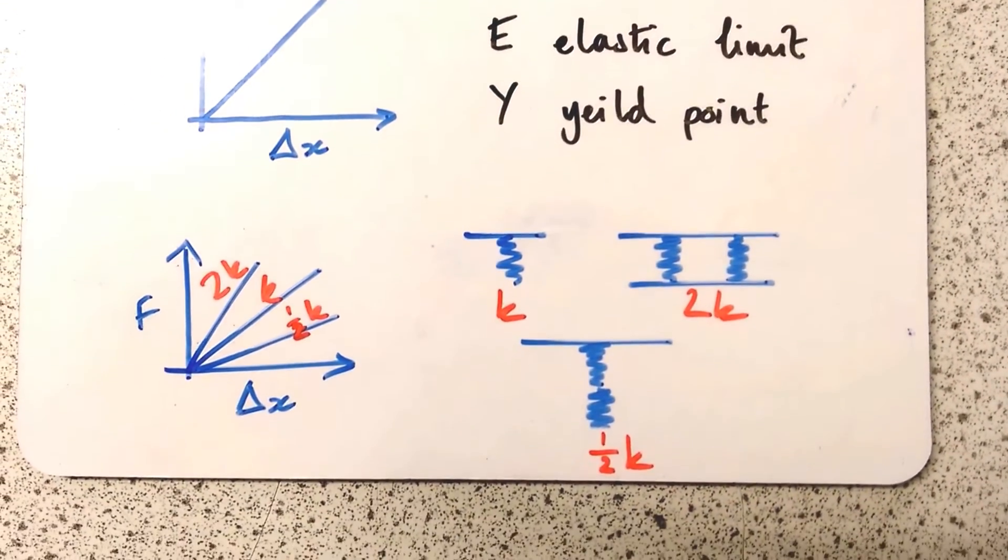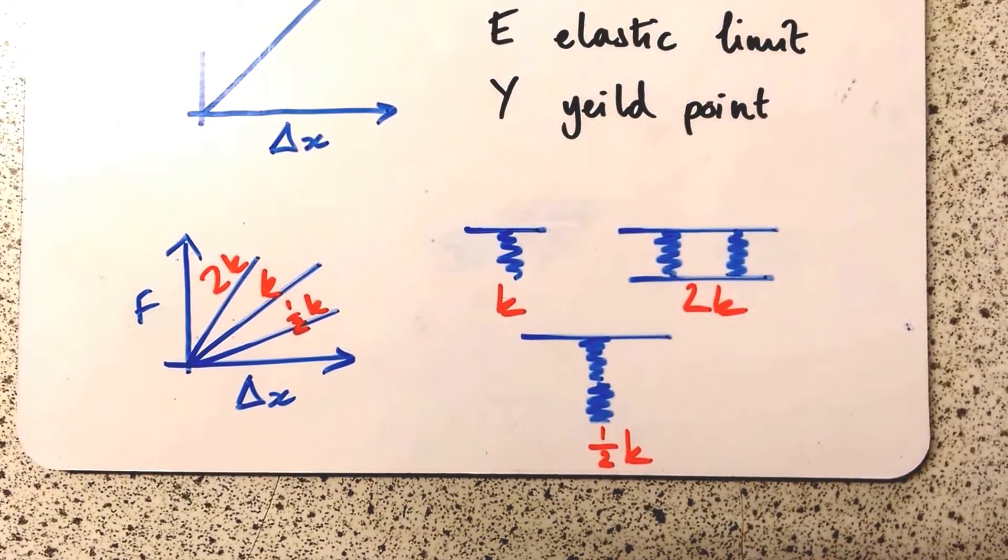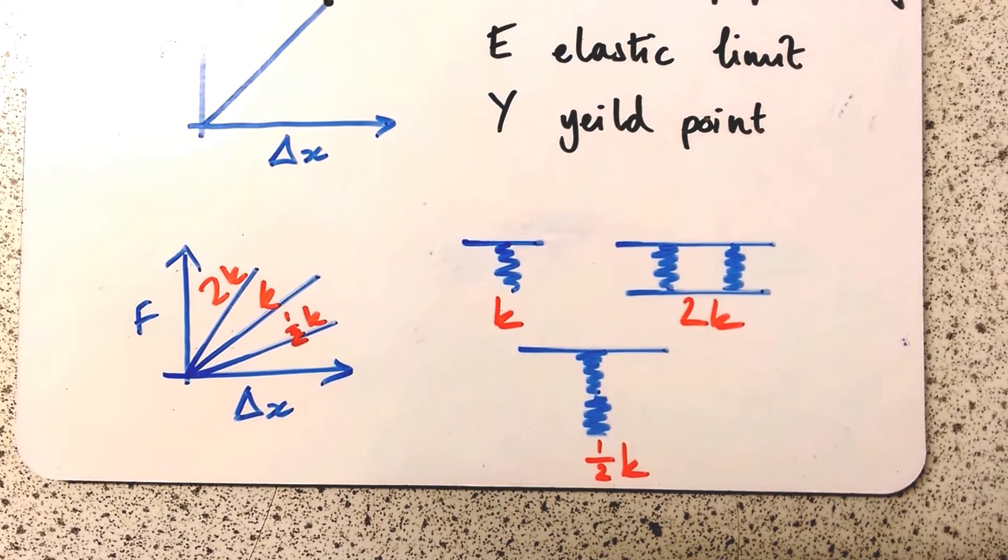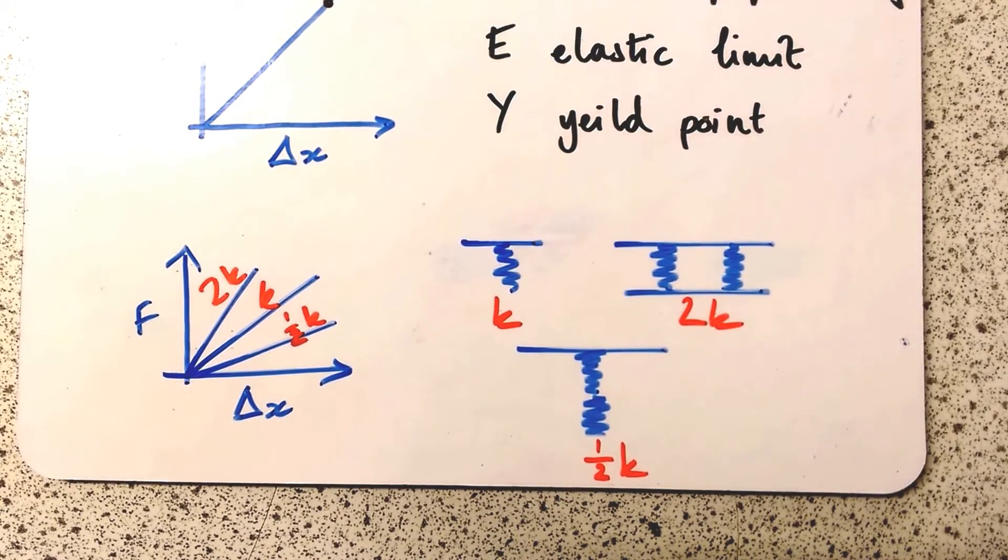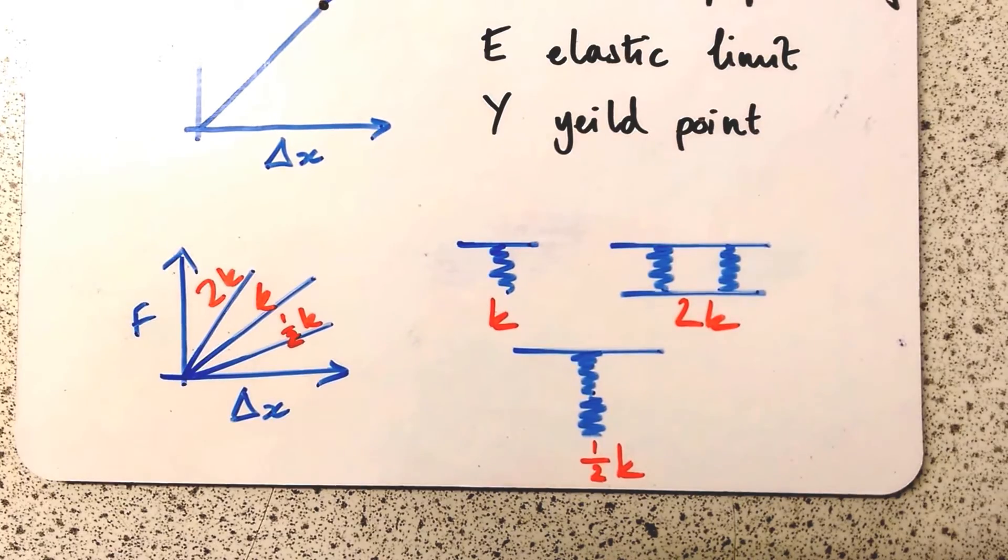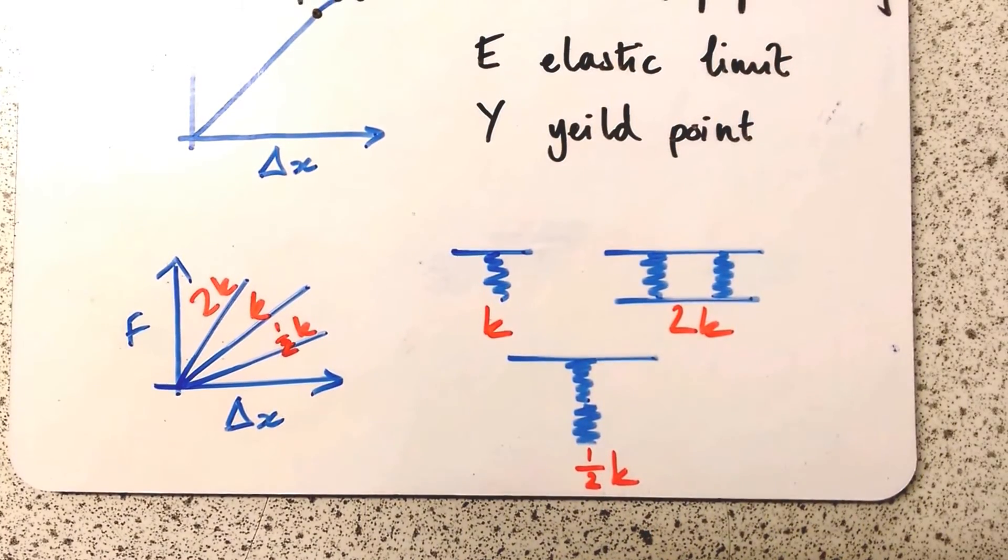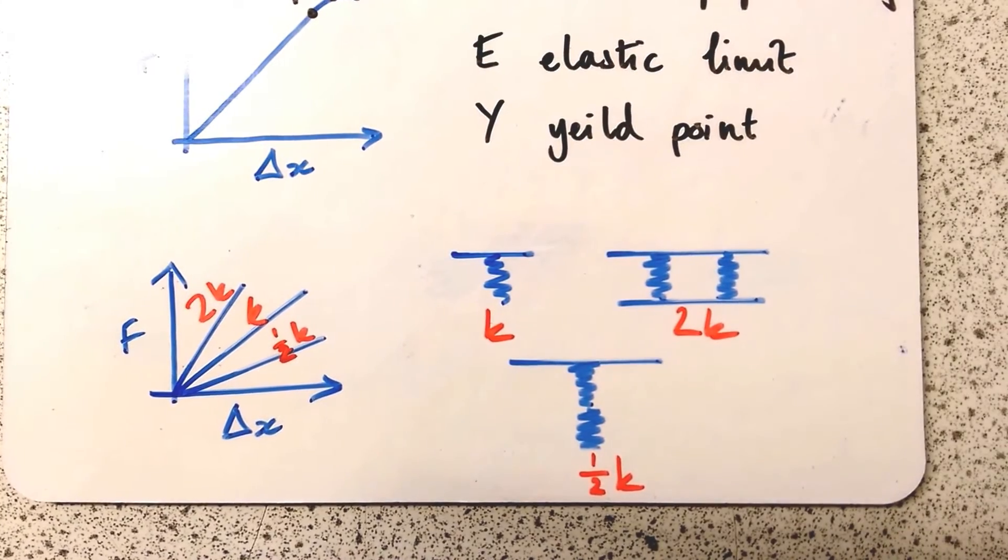Down here I've got some examples of different spring constants and how they're represented on the graph. The steepest line is double the spring constant of the middle line. So the middle line has spring constant k, the steeper line has spring constant 2k, and the shallower line has spring constant k/2.